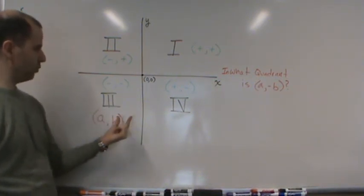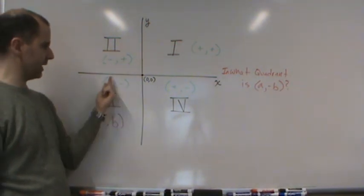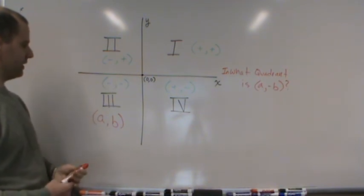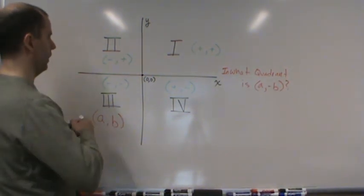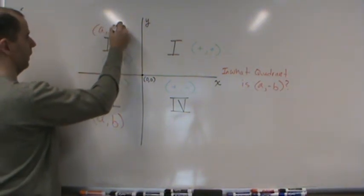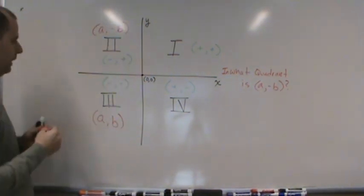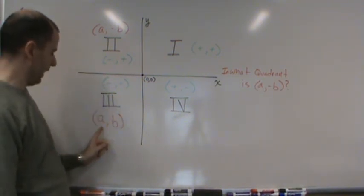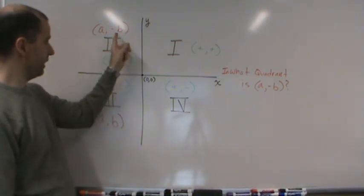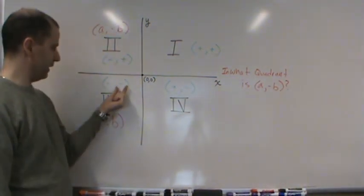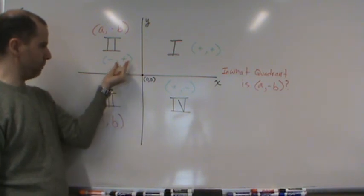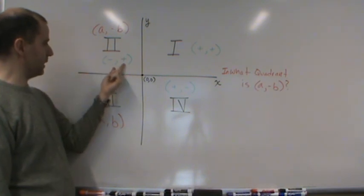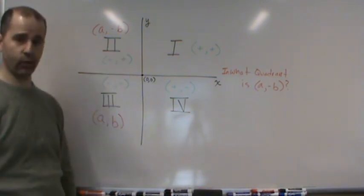So that means I'm taking this b and I'm making it the opposite value, which in this case is positive, which means I'm going to reflect across the x-axis. So (a, -b) has to be in the second quadrant because (a,b) is negative negative, and if I take the opposite of b, b becomes positive while a stays negative, so it has to be in the second quadrant.